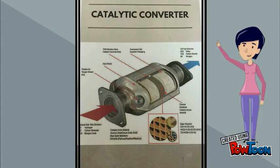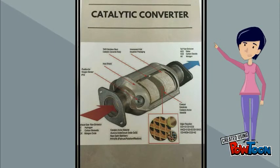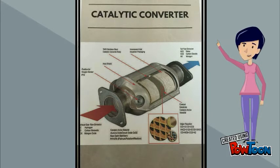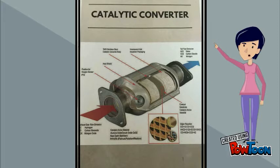This is an example of a catalytic converter from a car engine. Catalytic converters absorb nitrogen oxide, carbon monoxide, and hydrocarbon. Then, the catalyst causes a chemical reaction that converts harmful gases into less harmful gases, releasing carbon dioxide and water.